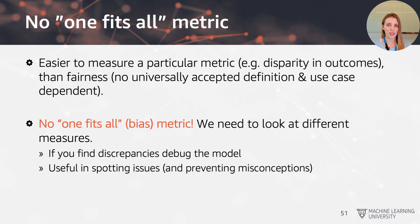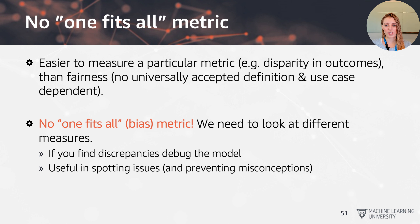So what do you do if you actually find that the performance is different? You should take a step back and start debugging the model, maybe collect additional data, use a different algorithm, or maybe modify the training of the algorithm to enforce certain fairness criteria and constraints more directly. More generally, using these metrics and computing them per group can be very helpful in spotting issues and preventing misconceptions.